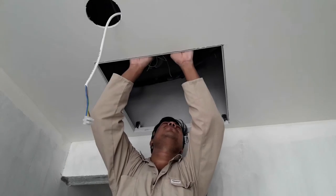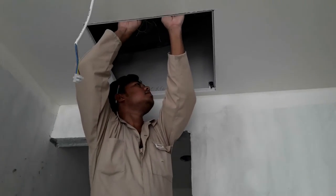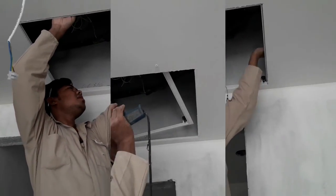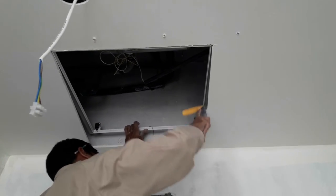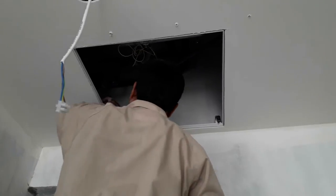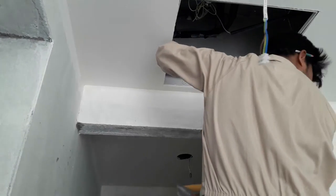If we find the pre-cut gap is not exact, meaning it's not 60 by 60 or it's not a rectangle, and for this reason the frame is not being fixed properly, then we have to cut or grind or file it with a metal file.